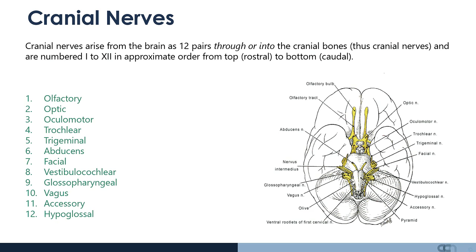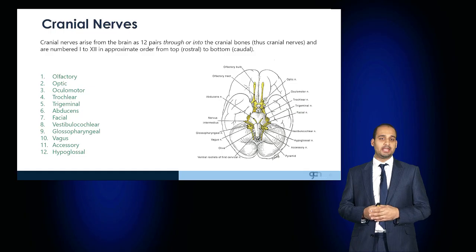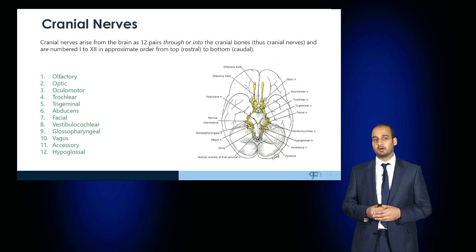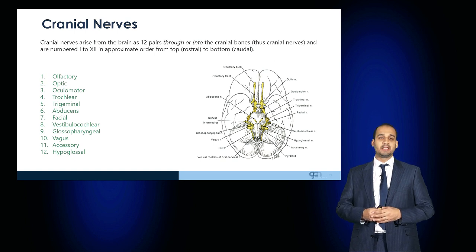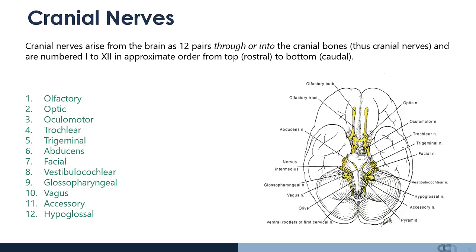The first cranial nerve is the olfactory nerve, the second optic, third oculomotor, fourth the trochlea, the fifth the trigeminal, the sixth the abducens, seventh is called the facial nerve, the eighth is the vestibulocochlear nerve, ninth is the glossopharyngeal, tenth is the vagus, eleventh is the accessory and twelfth is the hypoglossal.